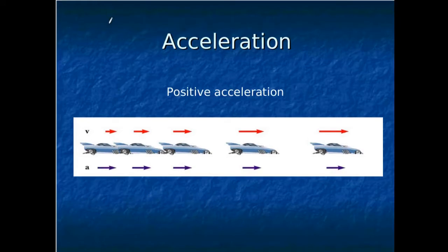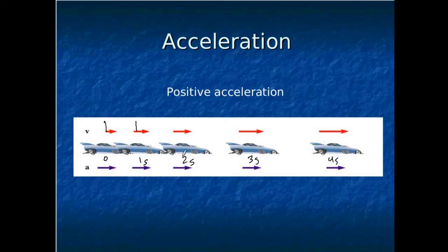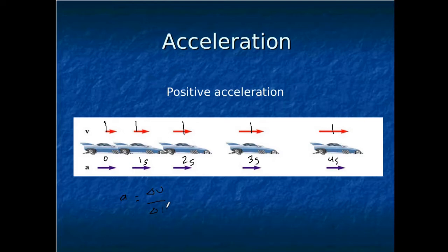In the next example, we have a positive acceleration. The strobe photo shows the position of the object at time zero, one second, two seconds, three seconds, and four seconds. You can see that the displacement of the object between each interval is changing — in the first second a certain distance, then a slightly larger distance in the next second, a slightly larger distance in the third, and again in the fourth. Because the displacement is increasing each second, the velocity is increasing. So you have a positive change in velocity divided by the time, giving you a positive acceleration.